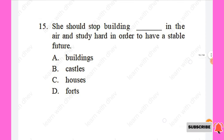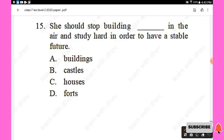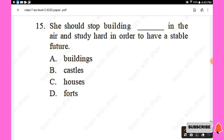Question 15: She should stop building — in the air and study hard in order to have a stable future. Options are: buildings, castles, houses, forts. The answer is 'castles' — she should stop building castles in the air and study hard. Option B is the right answer.